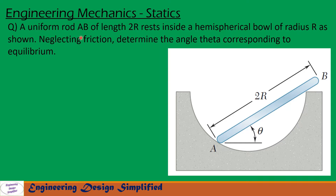Today's problem is: a uniform rod AB of length 2R rests inside a hemispherical bowl of radius R as shown. Neglecting friction, determine the angle theta corresponding to equilibrium. In this problem, a uniform rod of length 2 times the radius of this hemispherical bowl is resting inside it. For the condition of equilibrium we need to find theta. Let us see in the coming slides how to solve this problem.